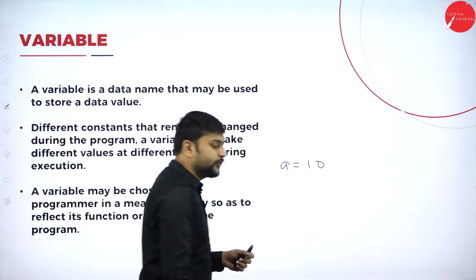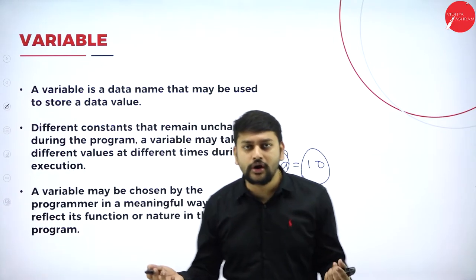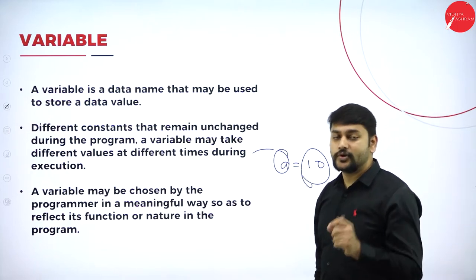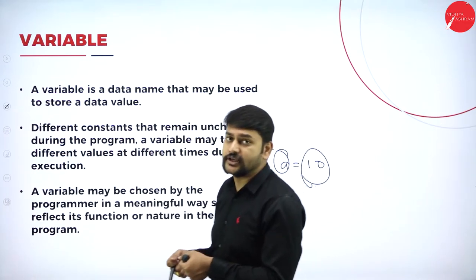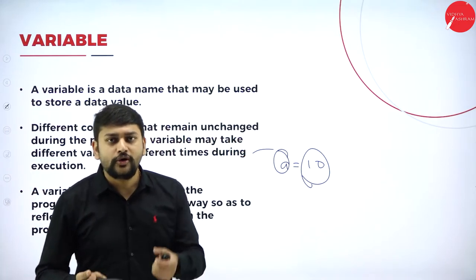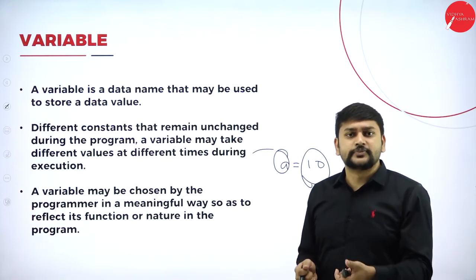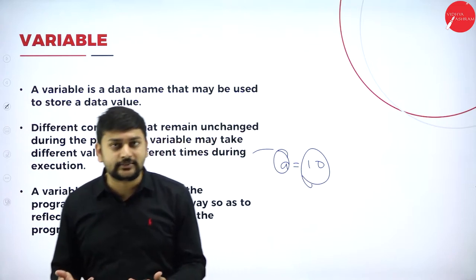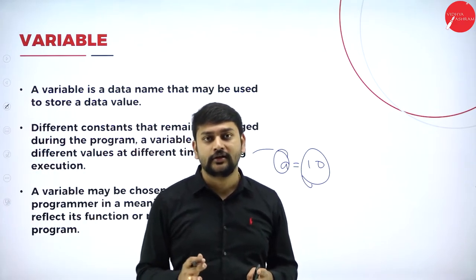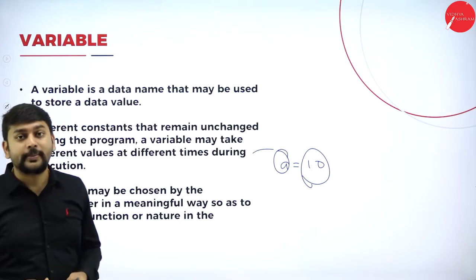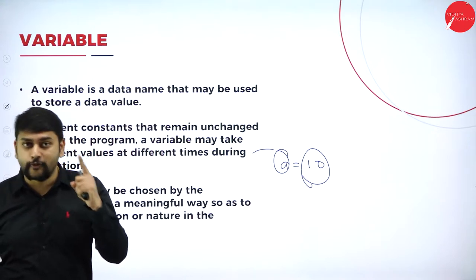Moving on to variables. In the example a = 10, I spoke about the value 10 but not about 'a'. So what is 'a'? This 'a' is what I will call a variable. Think of a basket — I have a basket to carry something. In the same way, variables are meant to store something. Whenever I say variable, imagine a basket. The variable always holds a value, and the value is nothing but the constant.